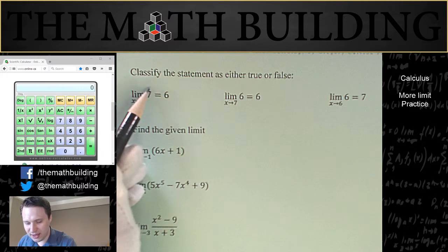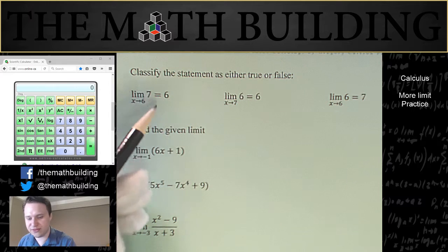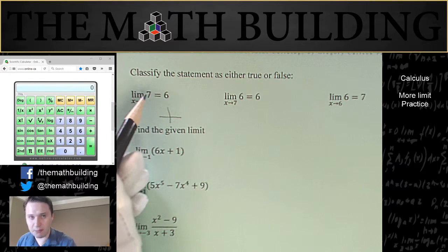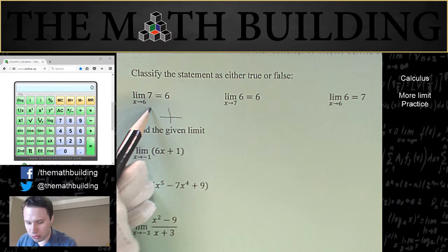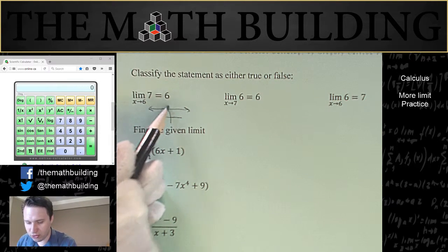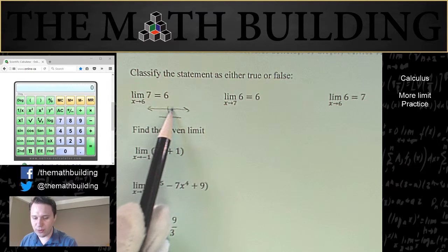The function in this case, f of x, is equal to 7. And as you know, the graph of a number, the graph of a constant, is just a horizontal line. In fact, this horizontal line is going through the value 7. So it's 7 everywhere.